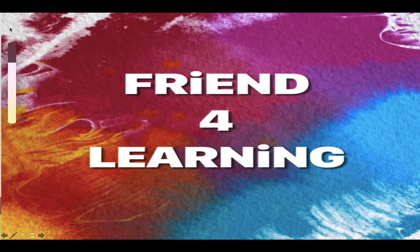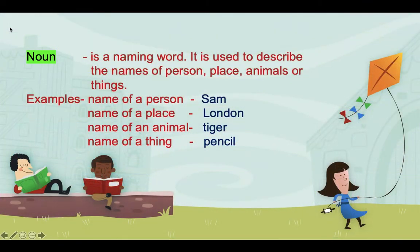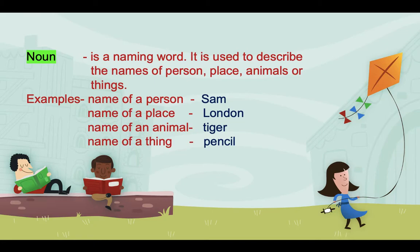Hello students, welcome back to Friendful Learning Channel. Today we are going to learn about adjectives. Before we learn about adjectives, we will recall the base, that is noun. What is a noun? A noun is a naming word. It describes the name of a person, place, animal, or thing. For example, names of persons: Sam, Ben, Tom, Ren. Names of places: London, France, Capitol Garden Park. Names of animals: tiger, lion, elephant. Names of things: pencil, pen, book, table.